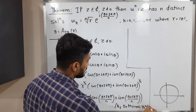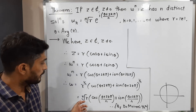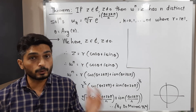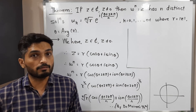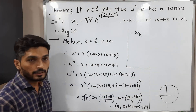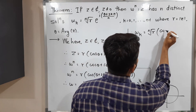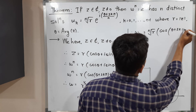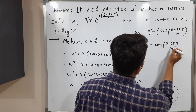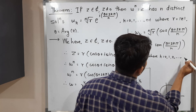We can put different values of k, since k is any integer: k equals 0, 1, 2, 3, and so on. If we put k equal to 0, we get the first solution. For k equal to 1, we get the second solution. For k equal to 2, the third solution. So for different values of k we get different solutions W_k, which equals nth root of r times (cos(theta plus 2k pi)/n plus i sine(theta plus 2k pi)/n), where k goes from 0, 1, 2, up to n minus 1.